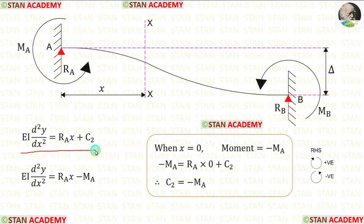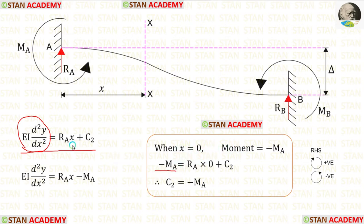In this equation, instead of EI d²y/dx², let us apply minus MA. And instead of x, let us apply 0. When we do that, we are getting C2, which is equal to minus MA.